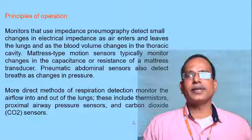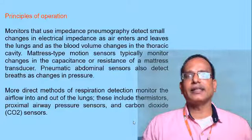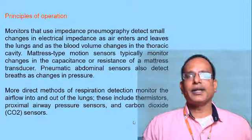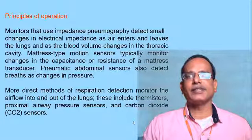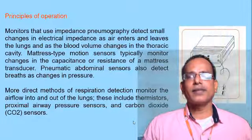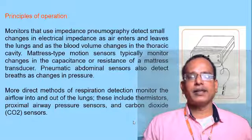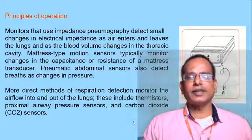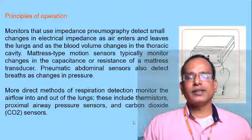The principal operation of the apnea monitor: monitors that use impedance pneumography detect small changes in electrical impedance as air enters and leaves the lungs and as blood volume changes in the thoracic cavity, causing impedance variations. Mattress-type motion sensors typically monitor changes in capacitance or resistance of the mattress transducer. Pneumatic abdominal sensors also detect breaths or changes in pressure. More direct methods using airflow detectors are available which identify airflow passing into or out of the lungs.